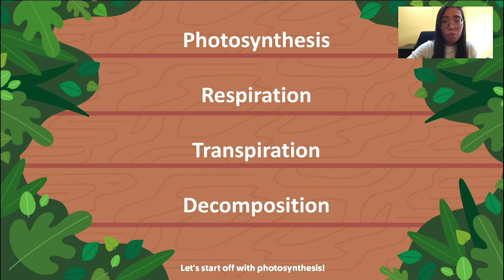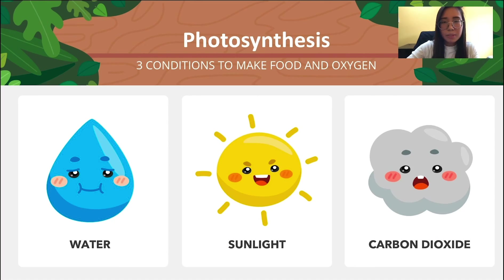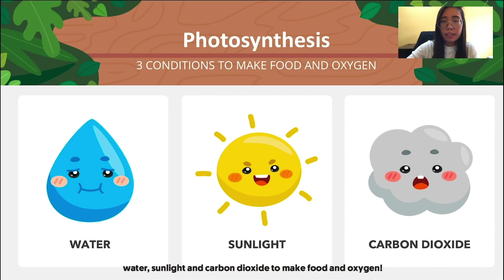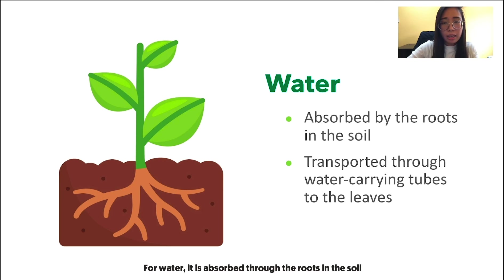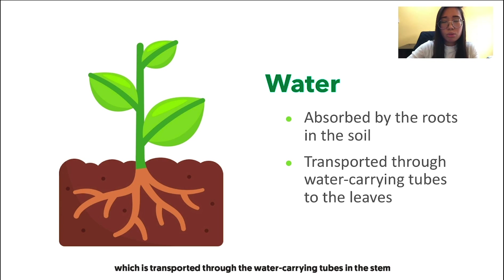Let's start with photosynthesis in detail. Photosynthesis requires three conditions: water, sunlight, and carbon dioxide to make food and oxygen. For water, it is absorbed through the roots in the soil, transported through the water-carrying tubes in the stem, and then to the leaves.